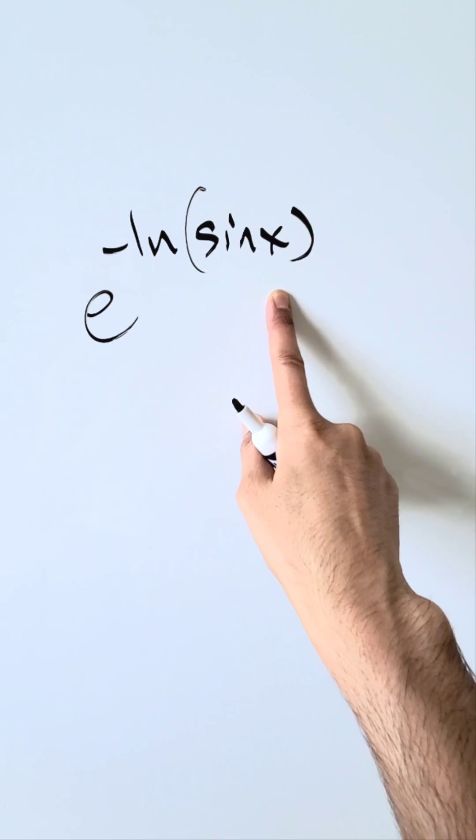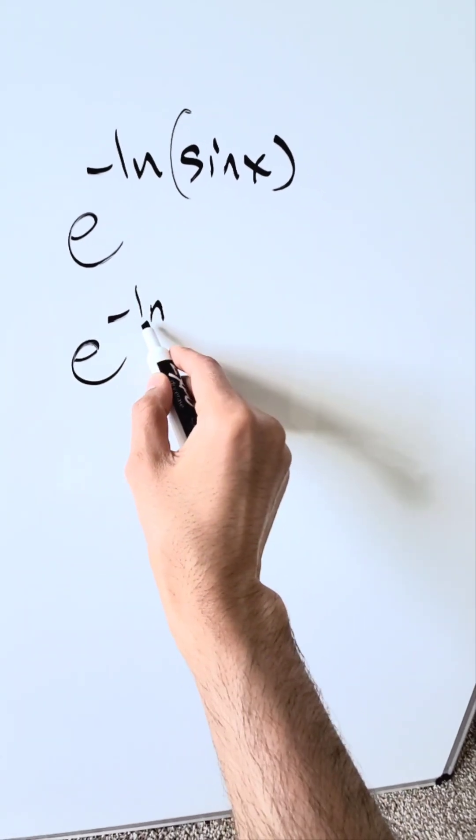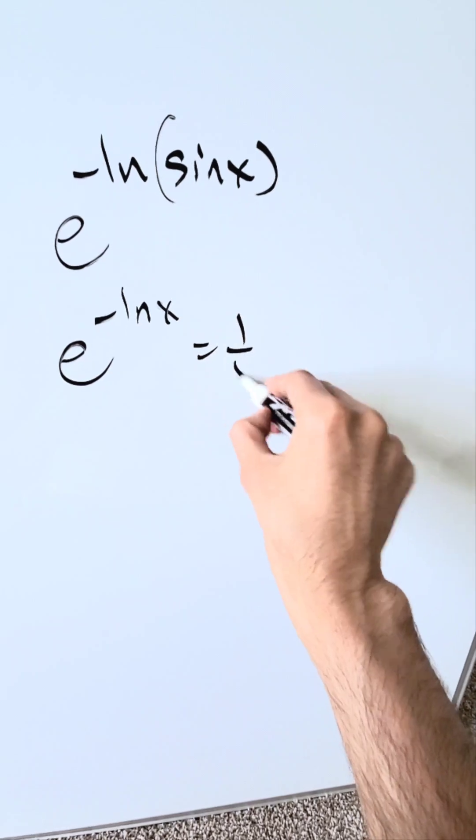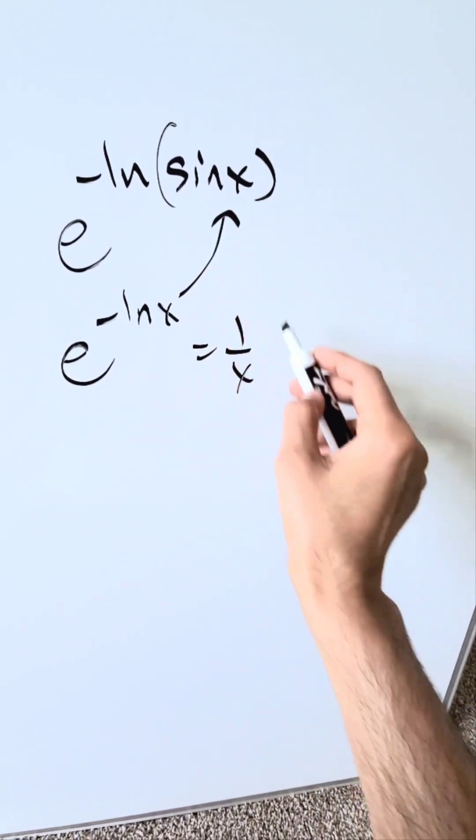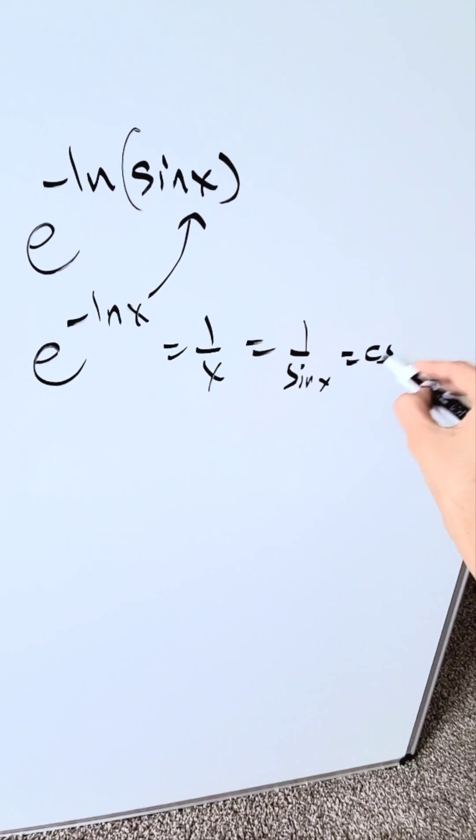Some of you know the answer right away in a matter of one second, because you are familiar with this identity: e to the power of minus natural log x will be equal to 1 over x. If x is sin x, then I know I'm looking at 1 over sin x, and I know my answer here is equal to cosecant x.